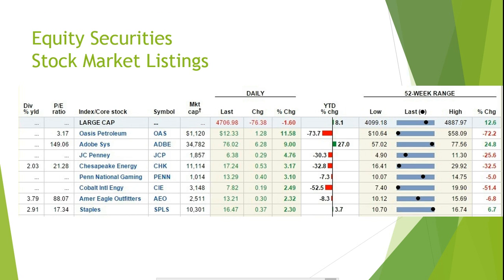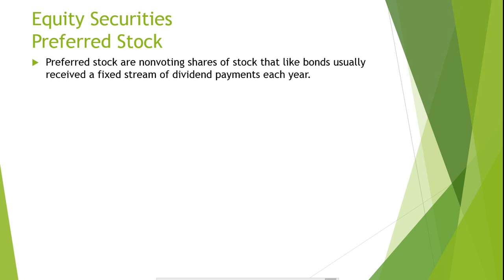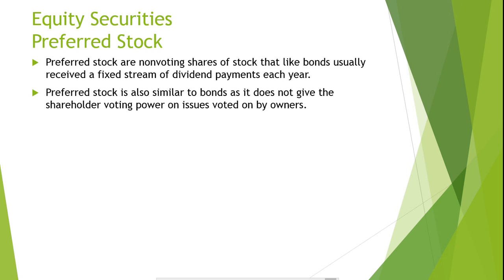Preferred stock has features similar to both common stock and bonds. Preferred stocks are non-voting shares of stock that, like bonds, usually receive a fixed stream of dividend payments each year. In a way, preferred stock is a form of a perpetuity since it pays an infinite fixed dividend payment. Preferred stock is also similar to bonds in that it does not give the shareholder voting power on issues voted by owners.